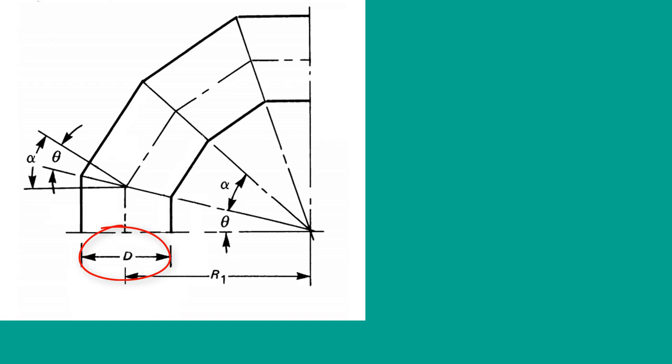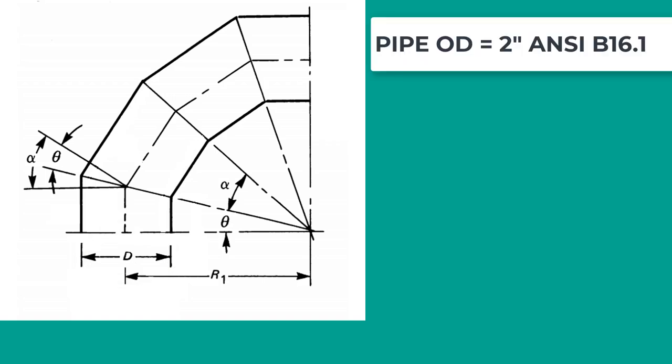First pipe OD. For this example, I am taking 2 inch pipe. As per ASME B16.1 dimension standard, it will be 60.3mm.